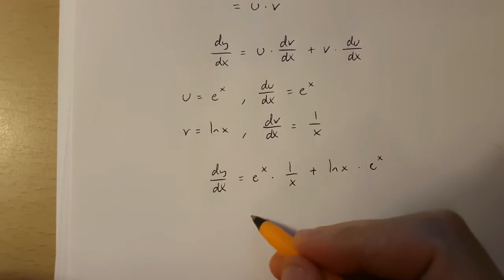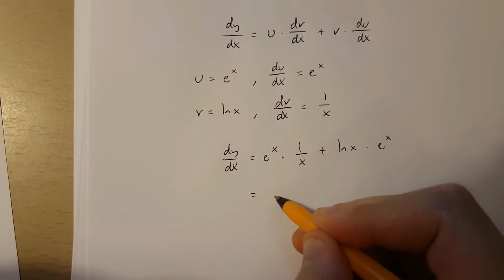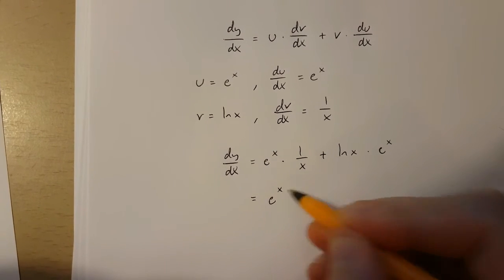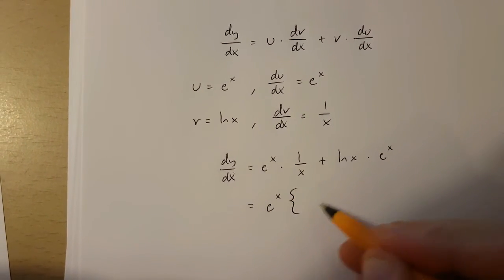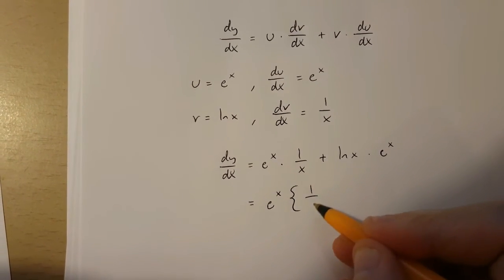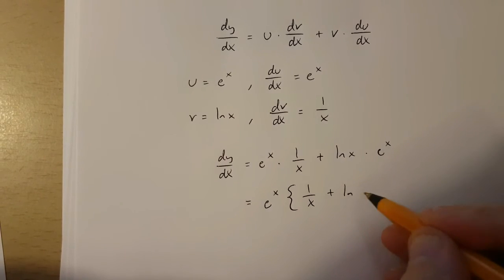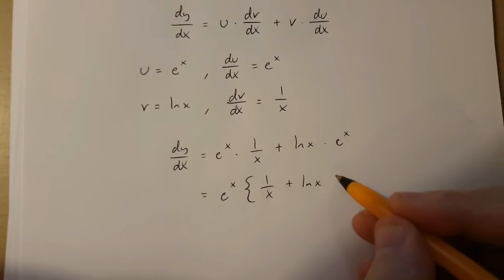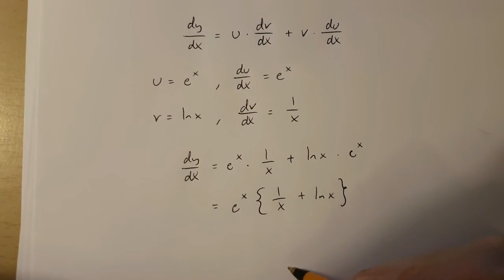And this can be simplified into e to the power of x times (1 over x plus ln(x)) in brackets.